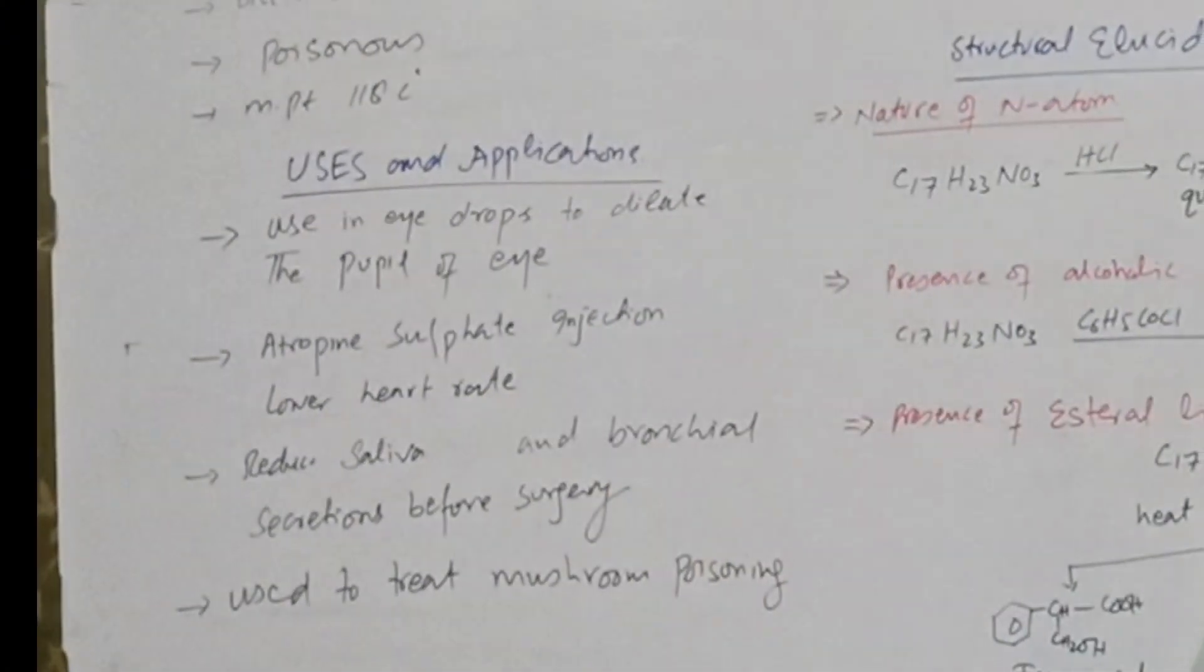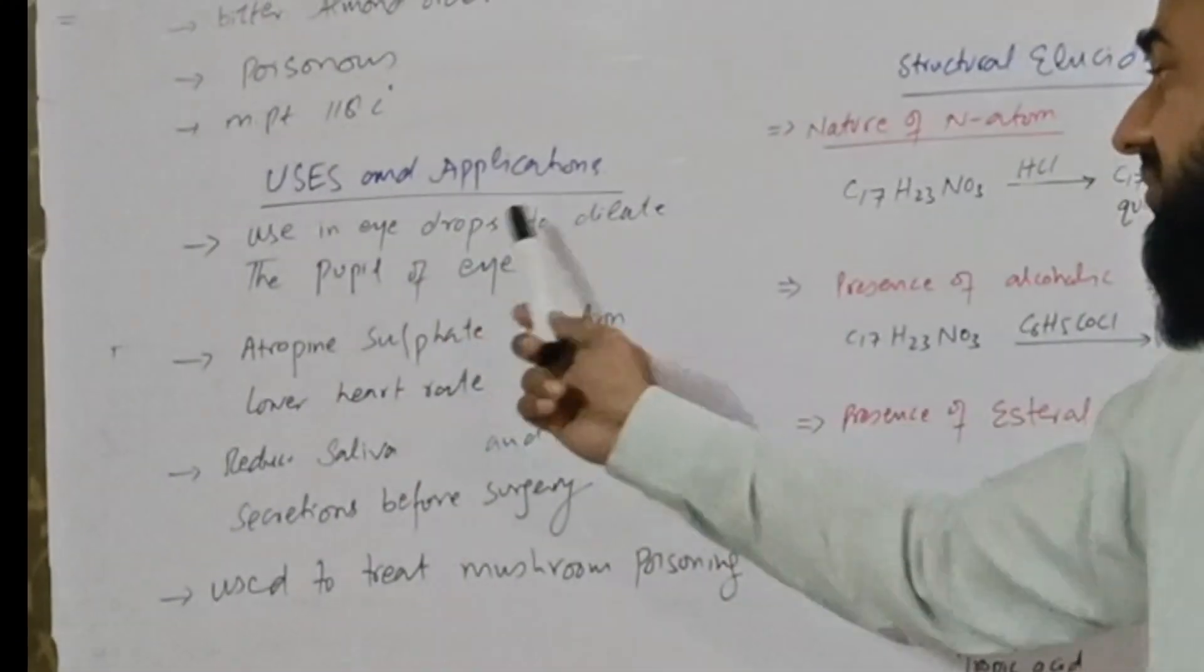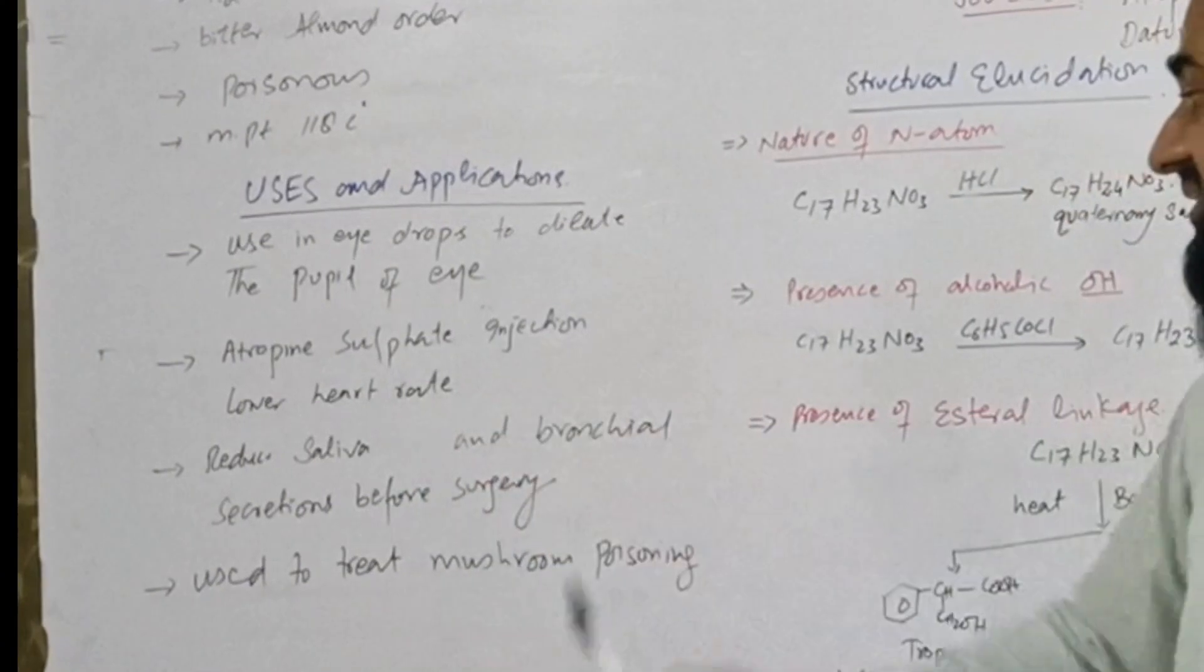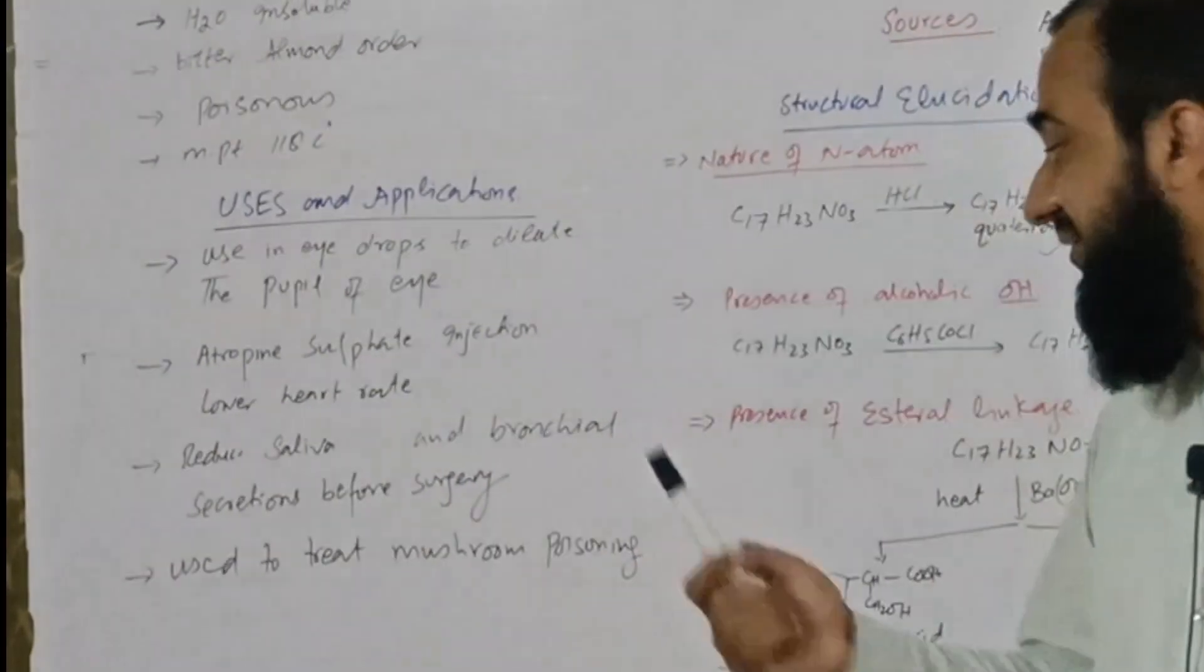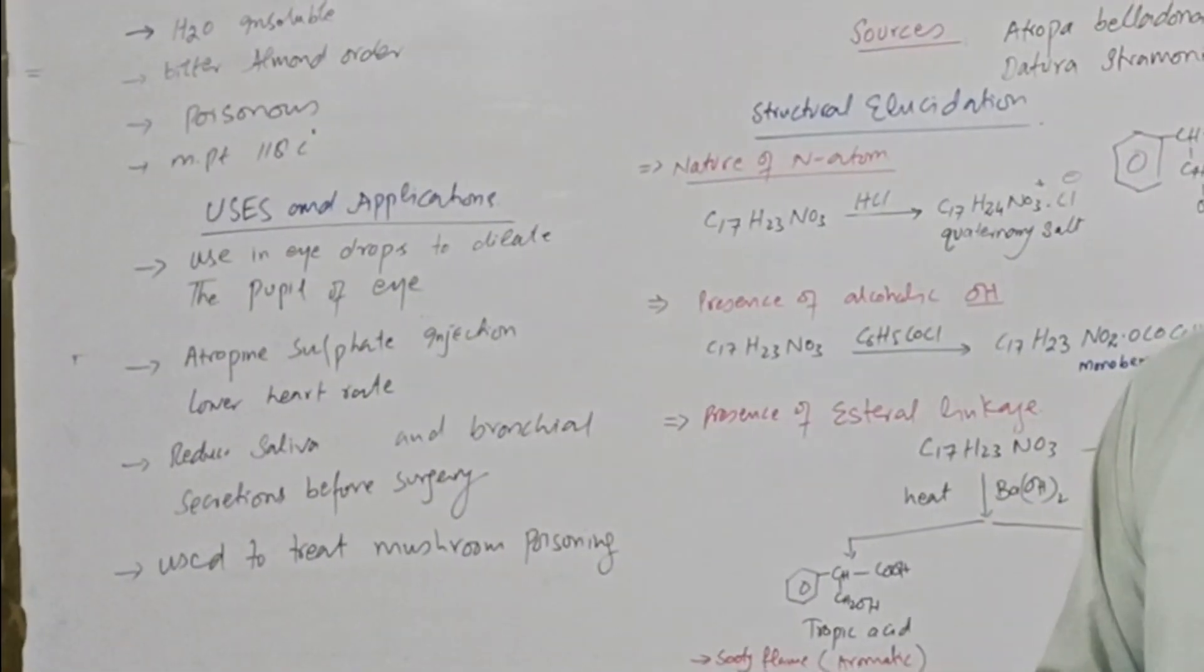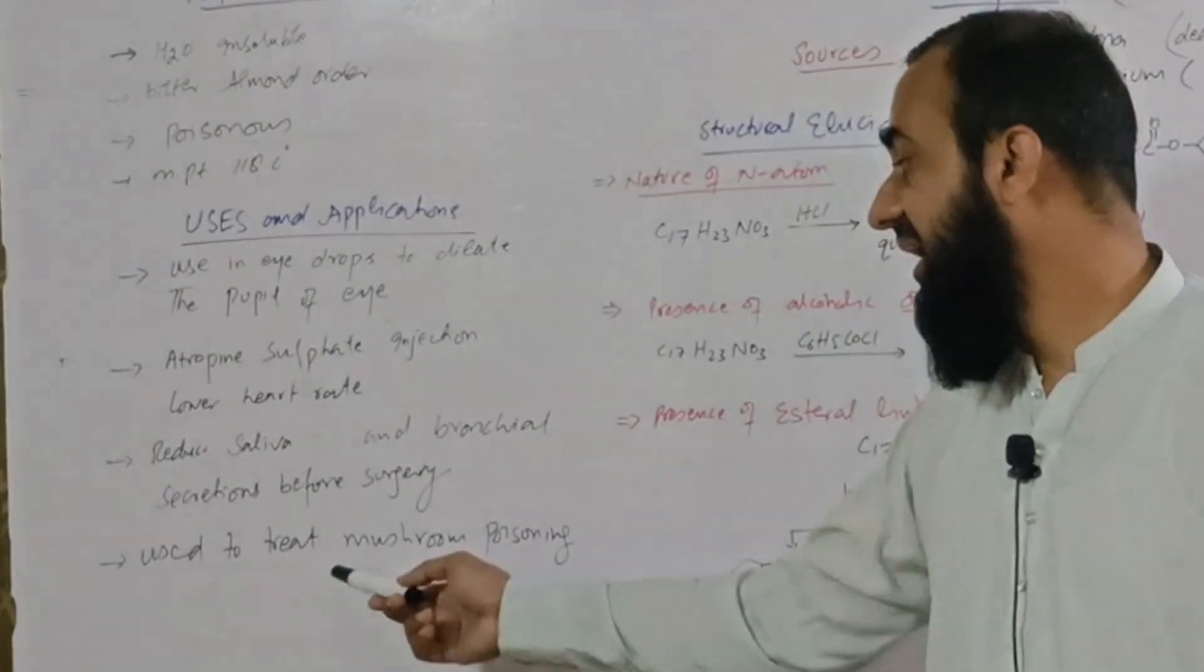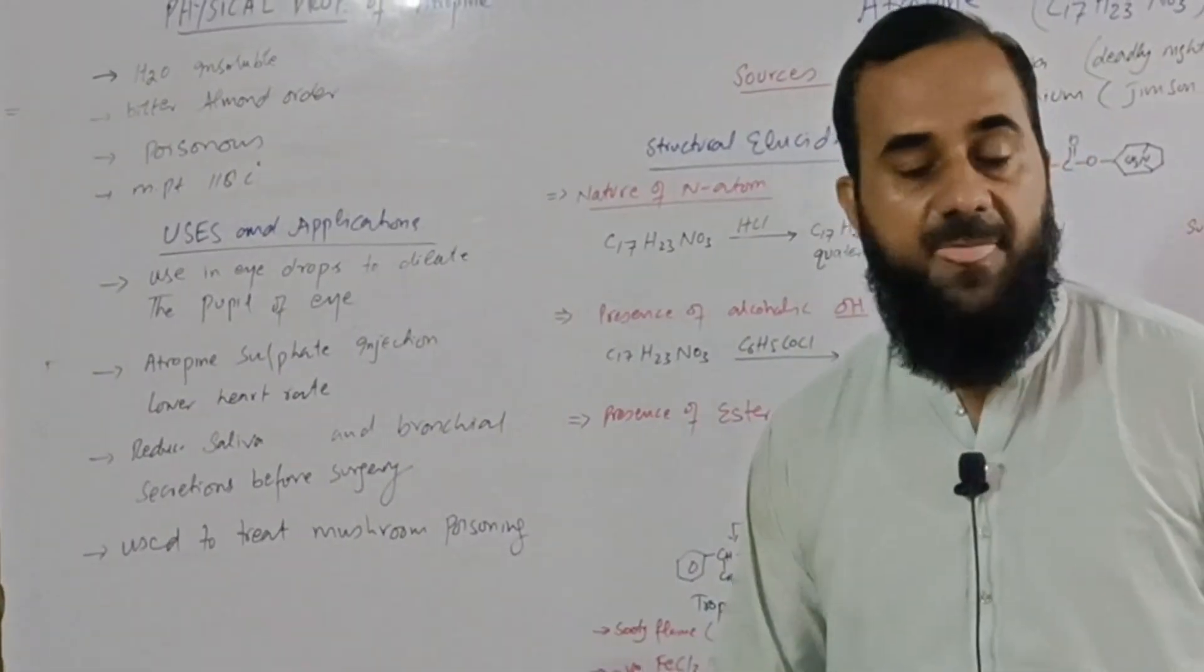It has wide applications in pharma industry. It is used in eye drops to dilate the pupil of the eye. Atropine sulfate injections lower the heart rate, and during surgery, saliva and bronchial secretions are decreased by the use of atropine. It is also used to treat mushroom poisoning.